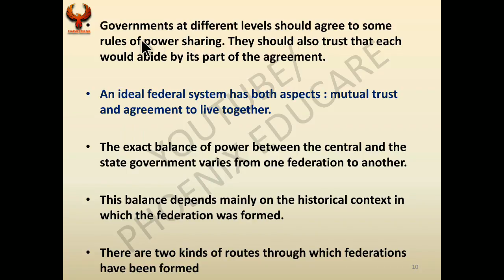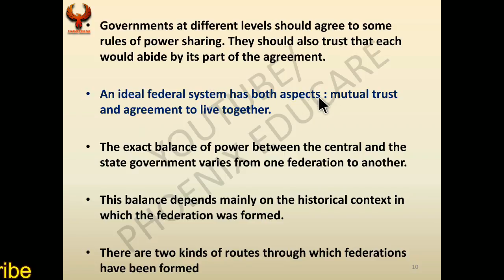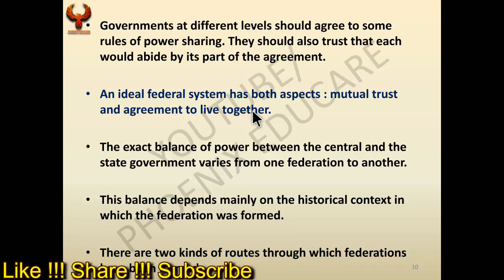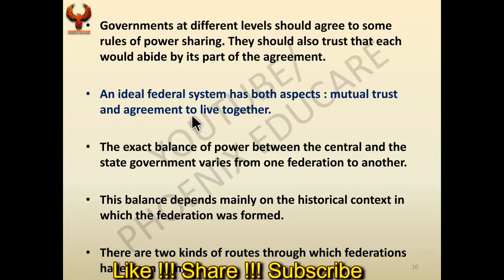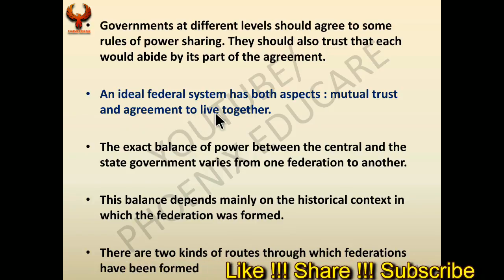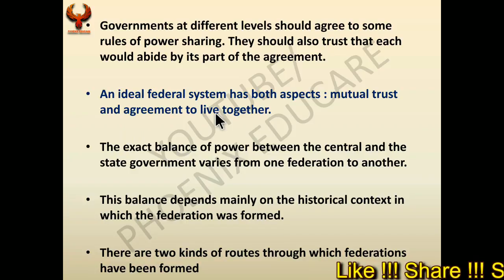Government at different levels should agree to some rules of power sharing and trust that each will abide by that agreement. An ideal federal system has both aspects: mutual trust and agreement to live together. In every federal system, there is trust between the central and state governments, and they are committed to living together and working for the welfare of the people.